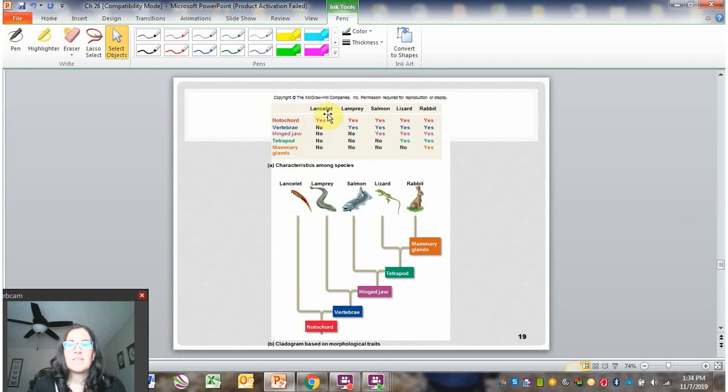All of them are yeses for having a notochord. The lancelet does not have vertebrae, but the lamprey, salmon, lizard, and rabbit do. So you have a pattern of no and four yeses. Hinged jaw is two no's and three yeses. Mammary glands are four no's and one yes. This table is really clearly showing this pattern that you want to aim for where you have progressively smaller in-groups based on the traits that you've used.